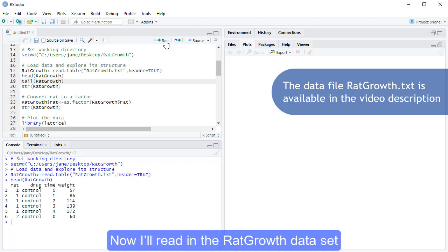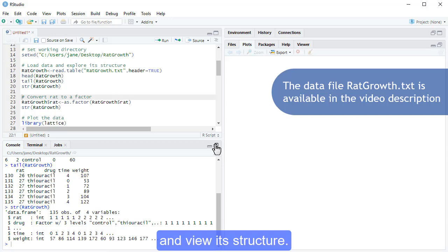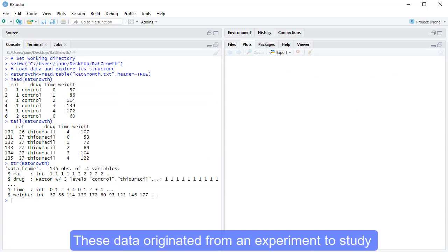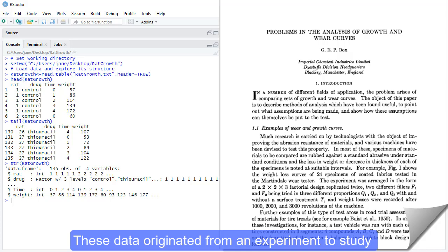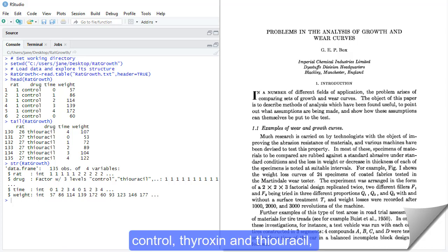Now, I'll read in the ratgrowth dataset and view its structure. These data originated from an experiment to study the effect of drugs on the growth rate of rats. The rats were put into one of three treatment groups – control, thyroxine, and thiouracil – and their weights were recorded weekly.